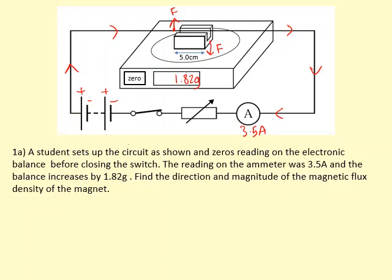Now what we need to do is find, let's start with the direction. Because the current is going towards the right, we can use Fleming's left-hand rule, pointing our second finger to the right, and the force is going upwards. So that means our first finger field should be pointing in this direction here. So that means we're going this, the north, and that's the south.